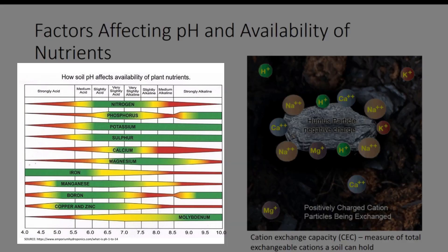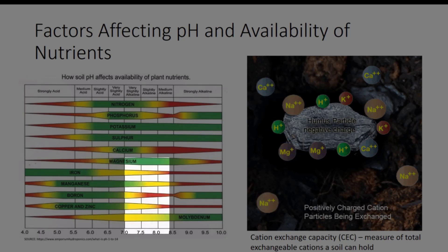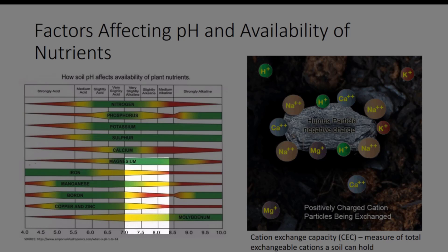For example, calcium, magnesium, manganese, copper, zinc, iron, and boron are typically available to plants when the soil pH is between 6 and 6.5. However, in alkaline soils, boron, manganese, and iron are not available.